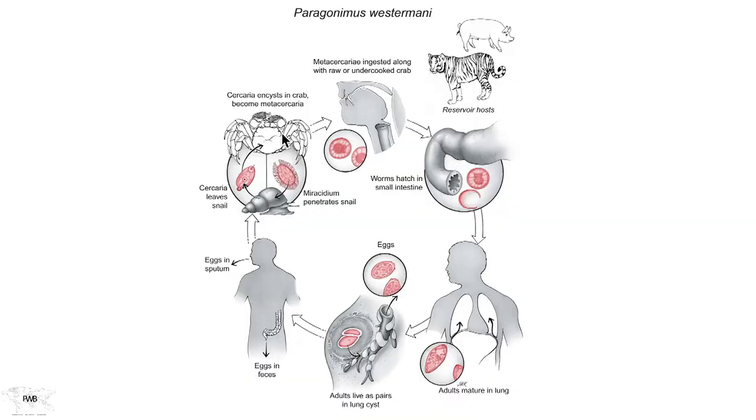By ingesting this crustacean uncooked or lightly brined, where the inner portion of the metacercariae is unaffected, we complete the life cycle. There are several reservoir hosts, including the domestic pig and the tiger. Tigers are among the only cats that actually like water and are omnivorous. The discovery of Paragonimus calicati was actually made at autopsy of a Bengal tiger kept at a zoo in the American Midwest.